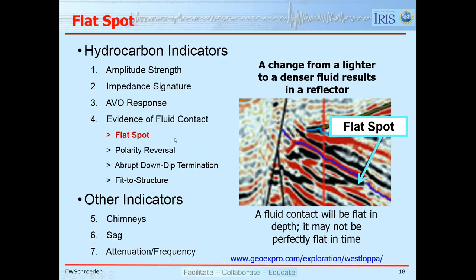We can look for evidence of fluid contacts, one of which is a flat spot. In this example, the blue horizon shows the top of the reservoir with a really strong amplitude. Cutting across the stratigraphy — which is inclined down to the right — is a reflector that is due to the change from hydrocarbon above to water or brine below. This is a classic response seen when the acoustic properties are right and the reservoir is thick enough to show the expression of the fluid contact, sometimes called a flat spot.